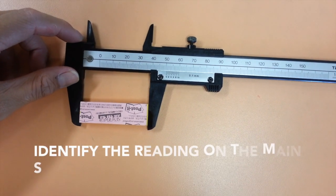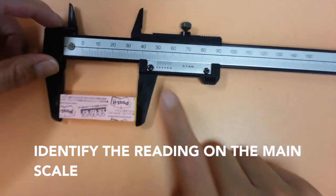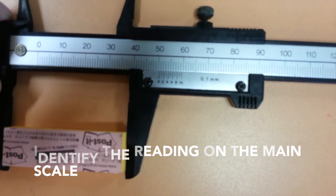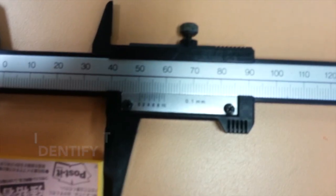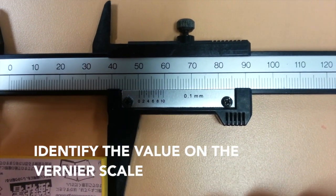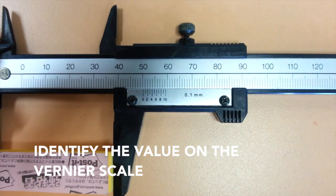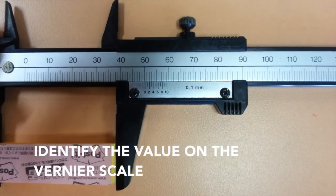Next, read the main scale directly opposite the zero of the vernier scale. In this case, the reading on the main scale is 50 mm. Next, we will look at the vernier scale to look at which marking on it coincides with the markings on the main scale. The value of the marking will have to be multiplied by 0.1 mm.